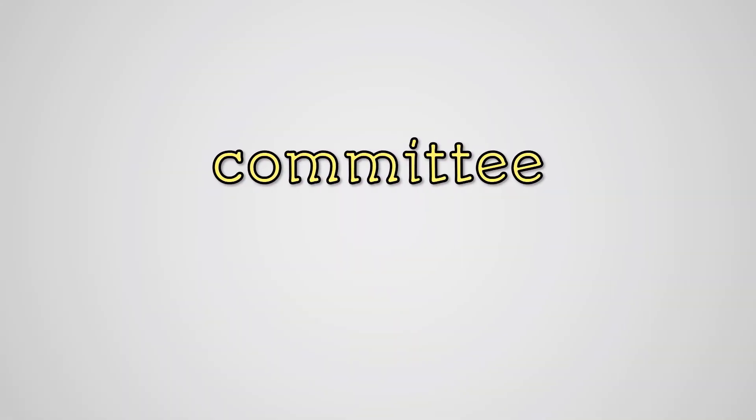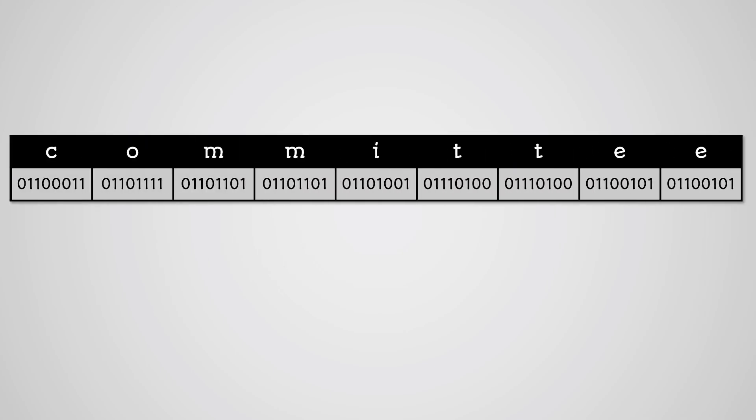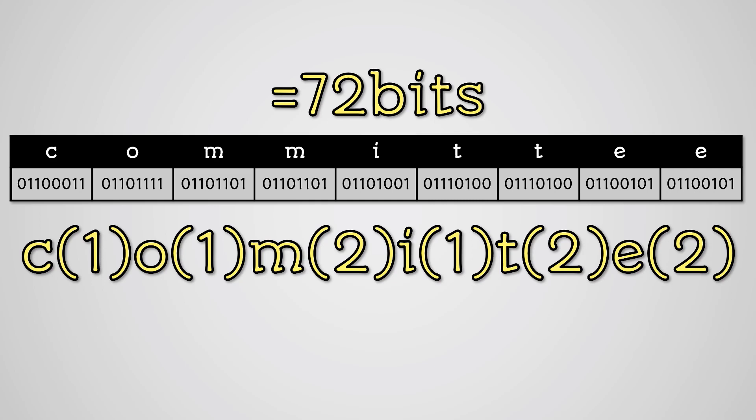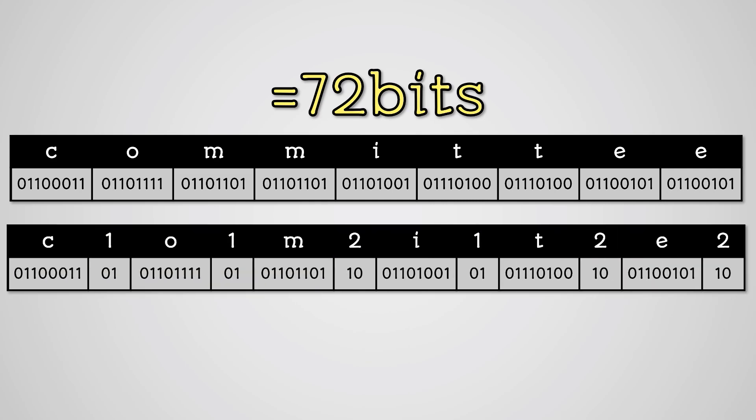What about the word committee? In ASCII, we get this. This gives an original word length in uncompressed ASCII of 72 bits. Applying RLE to this, we get this, which gives a final compressed value of 60 bits.